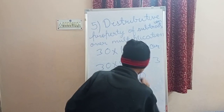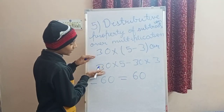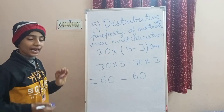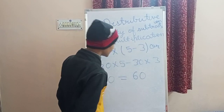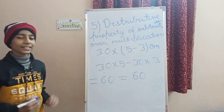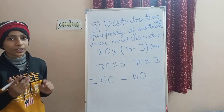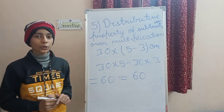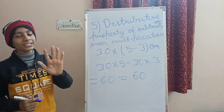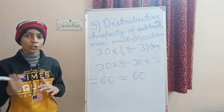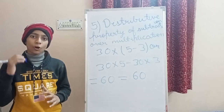The answer of both is the same. So we can write 30 into bracket 5 minus 3, or we can write 30 into 5 minus 30 into 3 — the answer will come out the same. Now you have understood all five properties of multiplication. There were five properties and all five hold on multiplication. Now we will understand the properties of division.